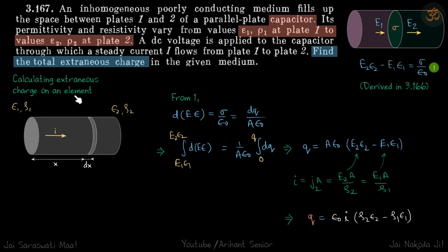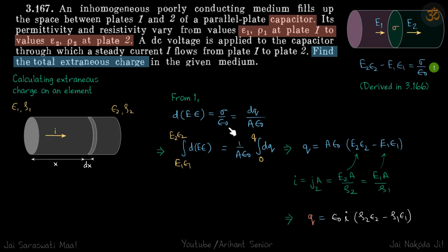Now coming to our problem — this cylinder. Because ε and ρ are changing everywhere, we take a small element of width dx and find the extraneous charge on that element. We can then integrate to find the total charge. For the small distance dx, the left side becomes d(E·ε), and d(E·ε) = σ/ε₀ = dQ/(A·ε₀), where dQ is the small charge developed on this surface.